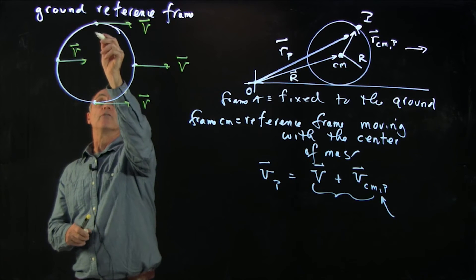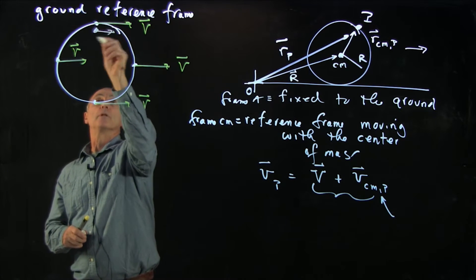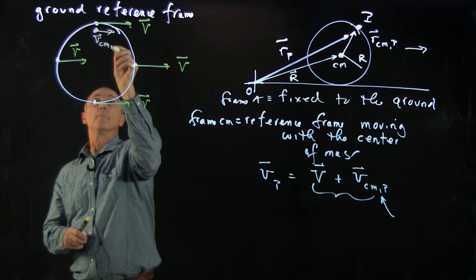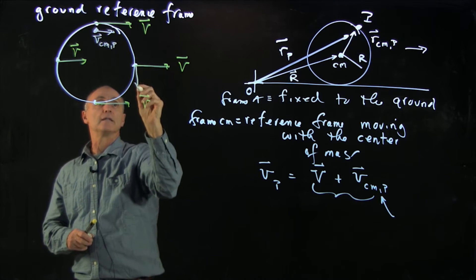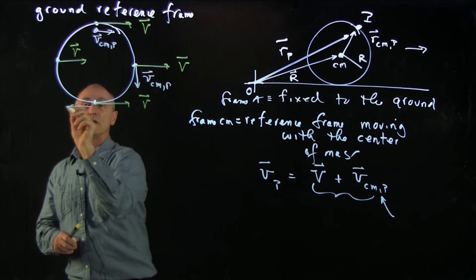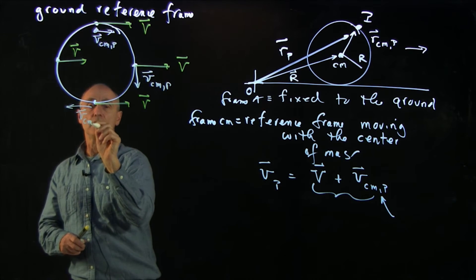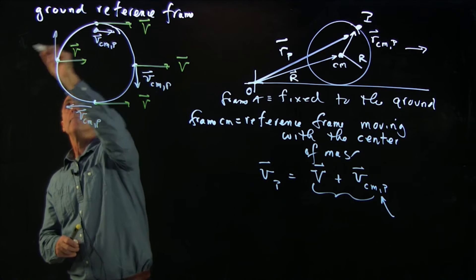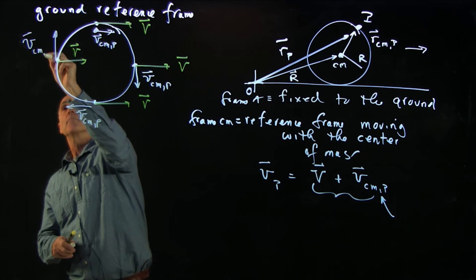So now let's draw those velocities. I'll just draw it right below, vcmp down here, vcmp. Notice here it's in the opposite direction, vcmp. And up here it's pointing up.